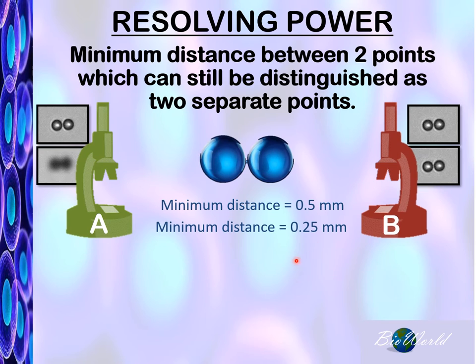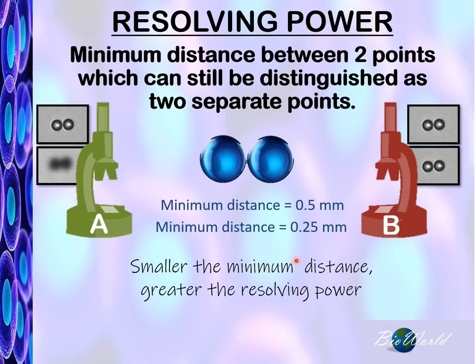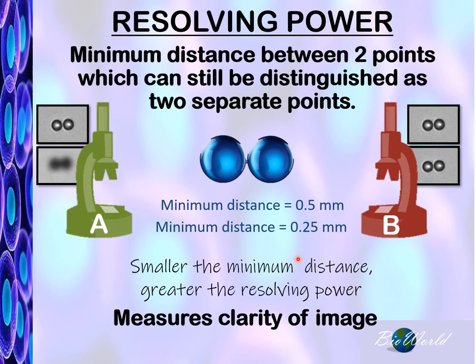So from here we can see that whichever microscope is still able to give us a clear image, although the minimum distance is getting smaller, then that microscope has a greater resolving power. So the resolving power is actually a measurement of the clarity of image, meaning that the higher the resolving power, the clearer the image.